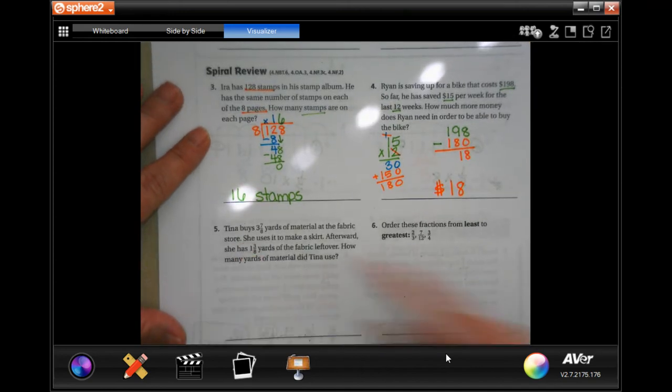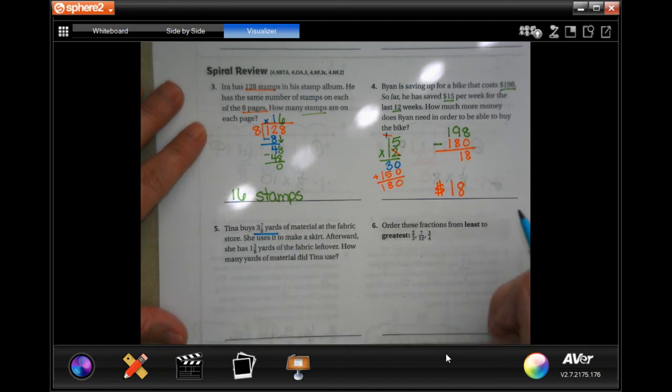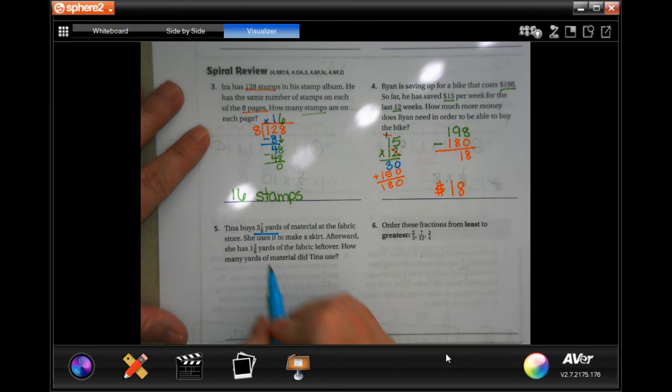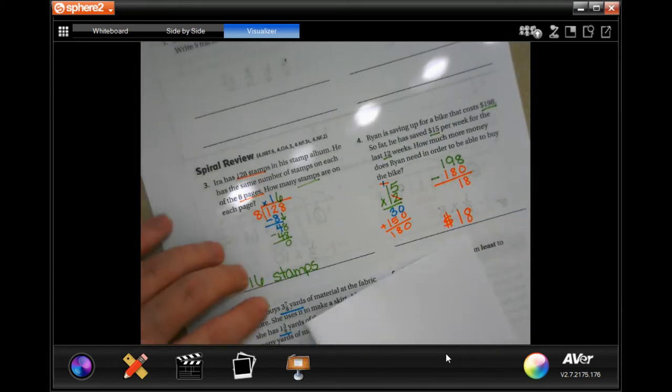Okay, Tana buys three and seven eighths yards of material at the fabric store. She uses it to make a skirt. Afterwards she has one and three eighths of fabric left over. How many yards of material does Tina use? Okay, so we're going to go three and seven eighths subtract one and three eighths.